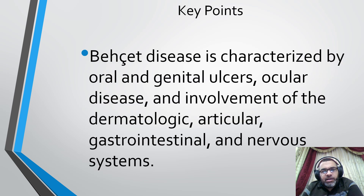The key point here is that Behçet's disease is characterized by oral and genital ulcers, ocular disease, and involvement of the dermatological, articular, gastrointestinal, and nervous systems.